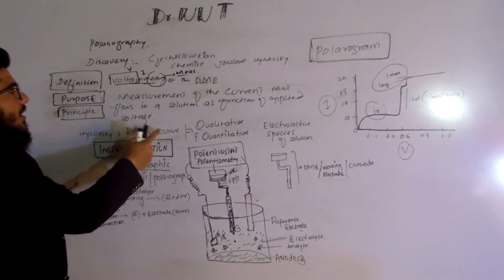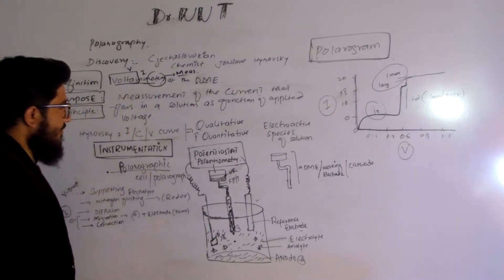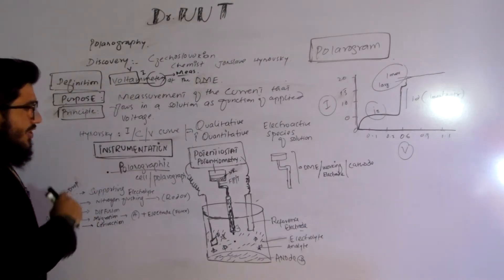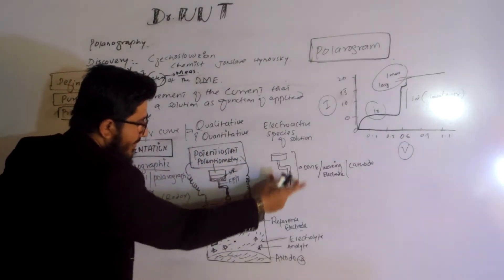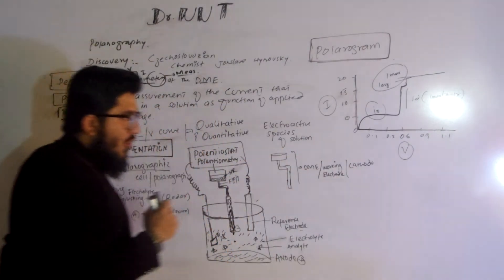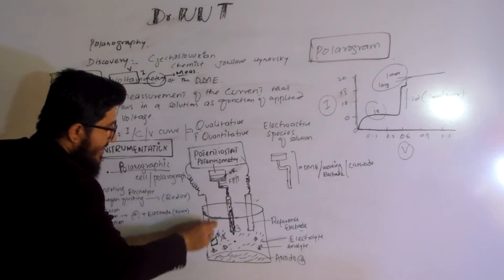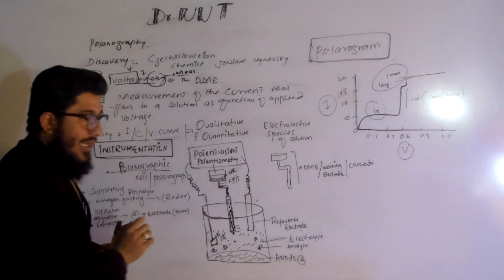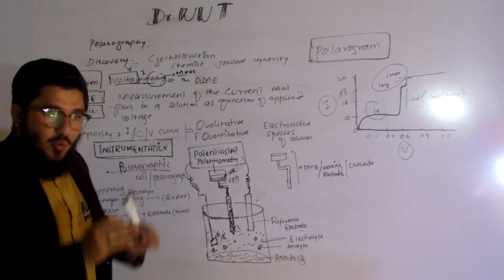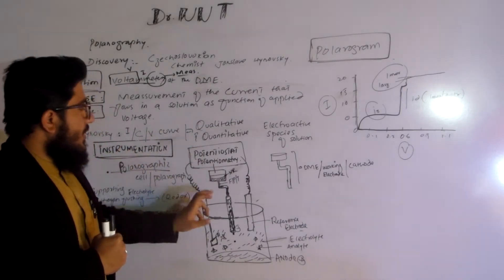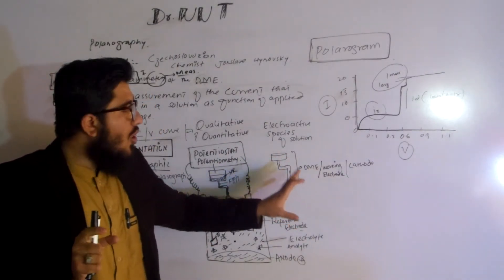Heyrovský obtained a graph that was actually telling him about the analysis — we'll discuss that graph later. First, let us study the instrumentation. The instrumentation of polarography contains a potentiostat, a potential-measuring device, and the dropping mercury electrode, which is also known as the working electrode or the cathode. We also have a reference electrode and an auxiliary electrode. The anode and cathode are the very specific electrodes responsible for polarography.